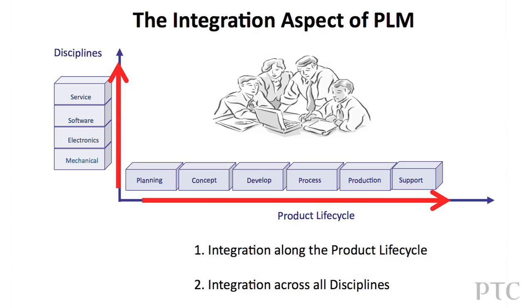Another very important component is the second axis — I call it the disciplines or domains. Today we really have no products, or only a few products, with pure mechanics. Our products today are highly sophisticated, high-tech products like cell phones, cars, and airplanes. They are all dominated by electronics and software right now. So I would like to combine in the second axis: mechanic, electronic, software, electric, and even from a long-term perspective, services.